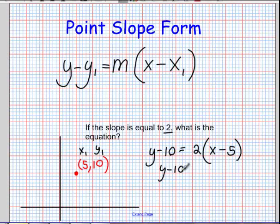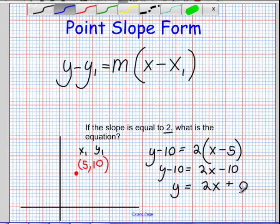So I get 2x minus 10. Now I'm going to add 10 to both sides. So in this case, I get y equals 2x, because I'm adding to both sides. Now you can see that this is in slope-intercept form, and I have no y-intercept. So this is plus 0. My y-intercept is 0.